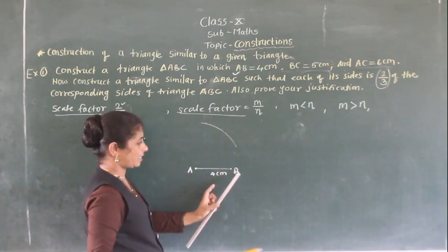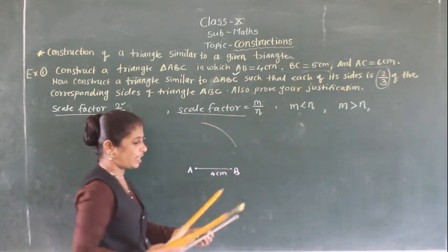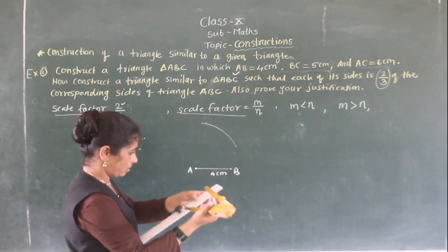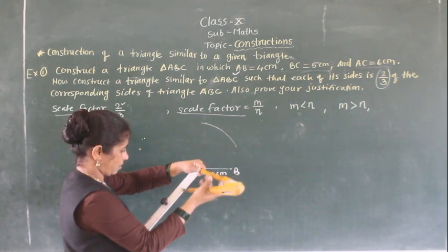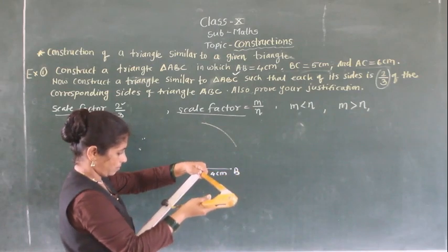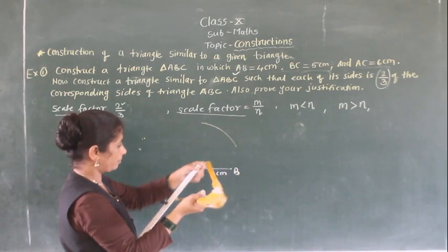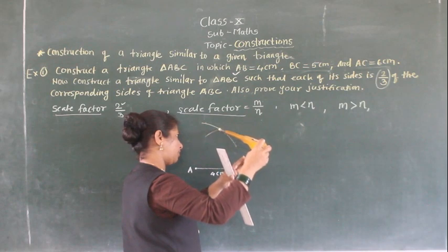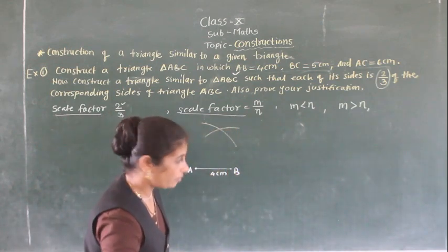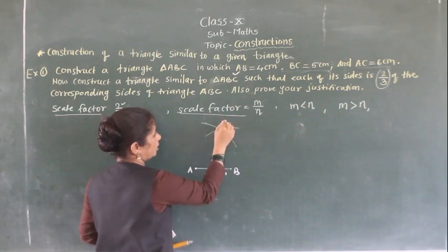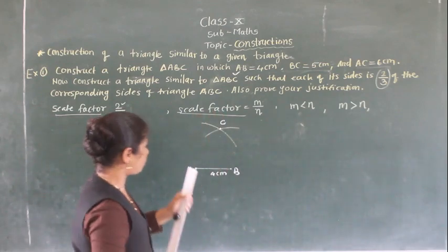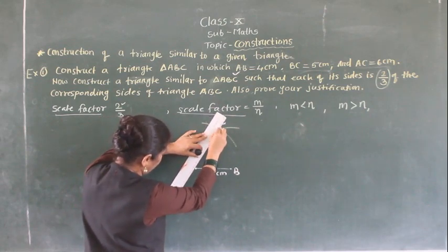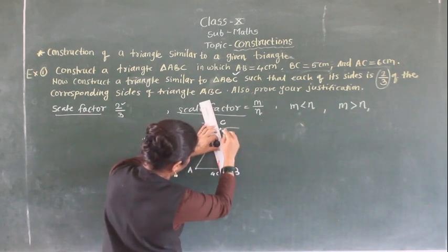From point B as center and BC equals 5 cm as radius, make an arc which intersects the previous arc. The point of intersection of these two arcs is your point C. Then join AC and BC. This is your original triangle ABC.